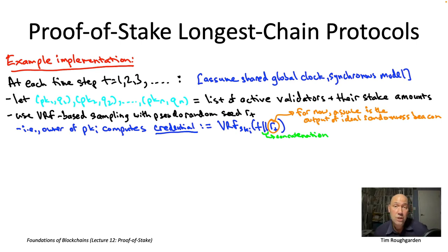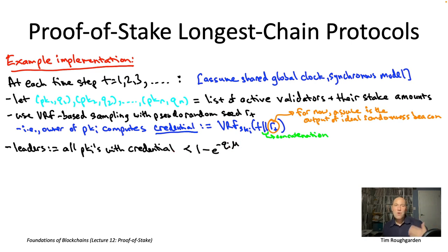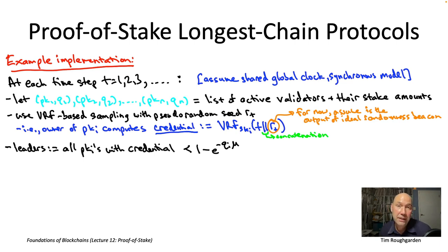So those are the private computations everybody does every time step: evaluating this verifiable random function with your private key on the input, which is the concatenation of time step T with the pseudorandom seed R sub T. What does everybody do with their credentials? As usual, if your credential is sufficiently small, that grants you privileges in the protocol. Specifically, in longest chain consensus we're thinking of rounds that have leaders who propose blocks — so if your credential is sufficiently small, below a suitable threshold, you qualify as a leader of the round and have the privilege of proposing a block at time step T.